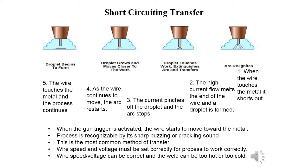Short-circuiting transfer: this mode actually involves short-circuiting the welding arc 20 to 200 times each second. This mode does not depend on gravity, but on actual contact between the electrode wire and the workpiece, so it can be used in any position — overhead, uphill, downhill. Direction of vertical welding can be either upwards or downwards. Heat input is low, so it can be used successfully on thin sections. Penetration is less than the other modes. The wire touches the metal and shorts out; high current flow melts the end of the wire and a droplet is formed; the current pinches off the droplet and the arc stops momentarily.